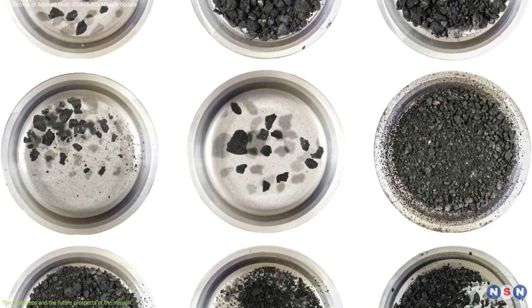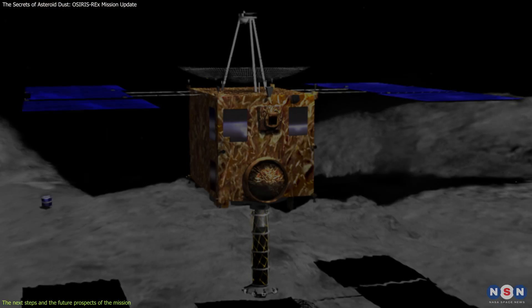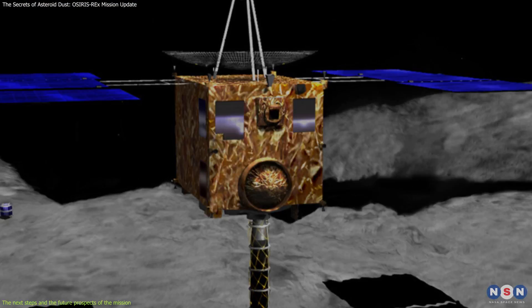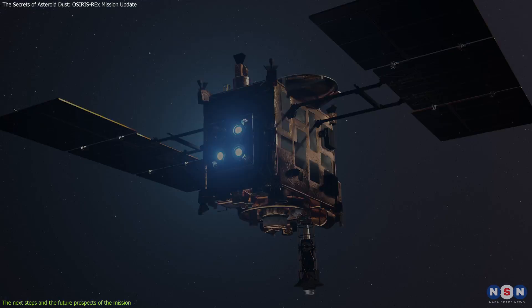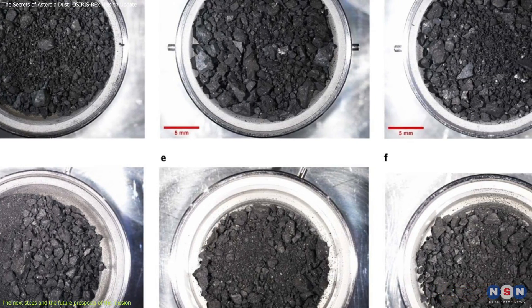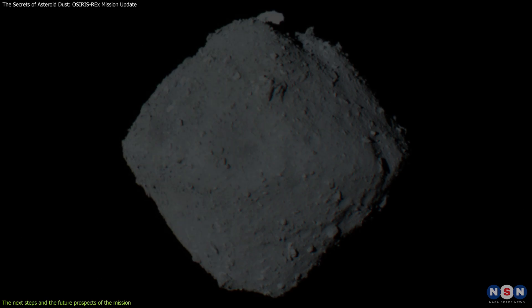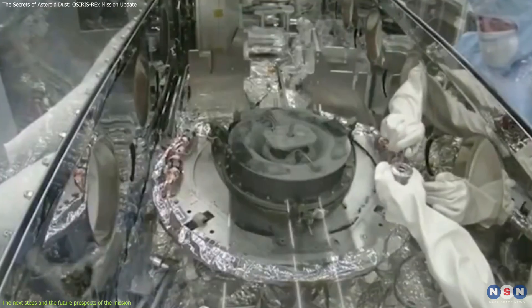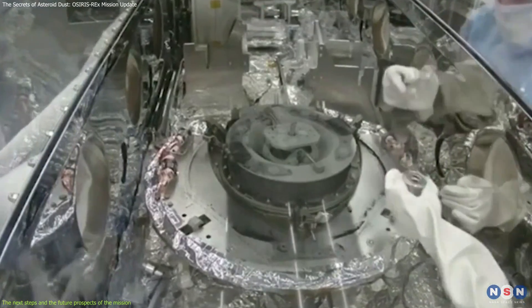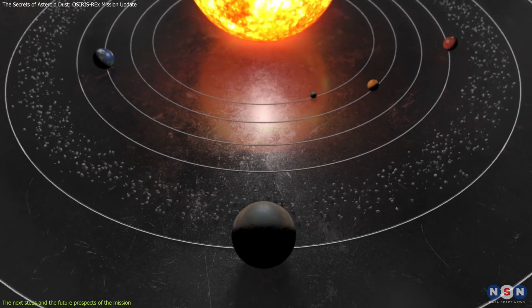Scientists will also compare the dust with other asteroid samples, such as those from Japan's Hayabusa and Hayabusa 2 missions, which collected samples from different types of asteroids, namely Itokawa and Ryugu. This will allow the scientists to better understand the diversity and similarity of asteroids in the solar system.